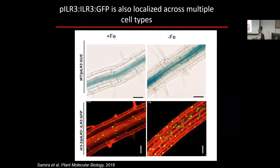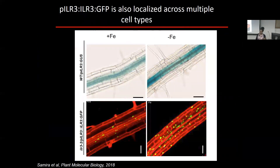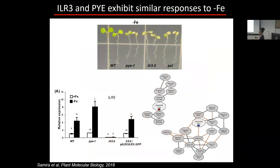That leads to the question of what is ILR3 doing. Similar to Popeye, the ILR3 transcriptional fusion is expressed specifically in the vasculature, but when we look at the protein it's localized in all cell types — suggesting ILR3 is also a mobile protein that moves from the vasculature to all cell types. ILR3 mutants show decreased tolerance to iron deficiency and increased chlorosis, and when we make a Popeye-ILR3 double mutant, we see a similar phenotype, suggesting they are part of the same pathway.